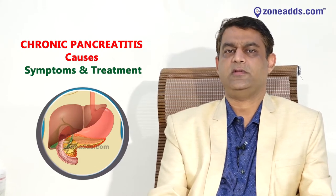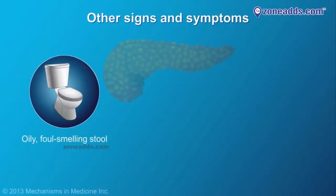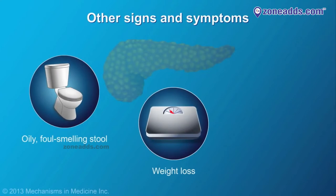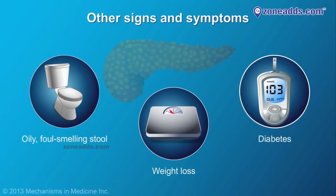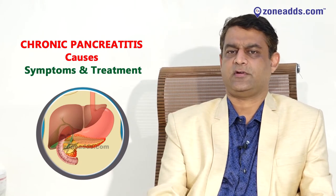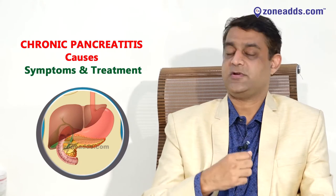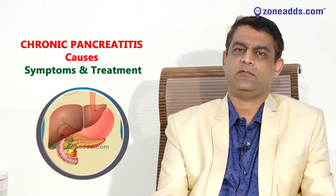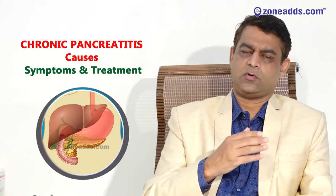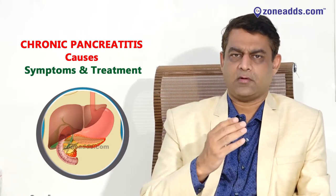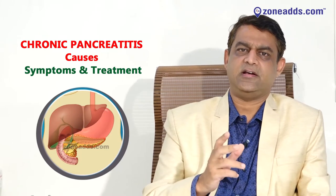The third important symptom relates to the stools. A lot of people will say they have sticky stools, and if they are careful they will tell you that whenever they pass motion, it usually keeps floating on the surface of the water. So basically we are looking at a patient who has pain and exocrine deficiency — malabsorption, especially of fats. A lot of patients of chronic pancreatitis will also present with diabetes, which depicts both exocrine and endocrine deficiency of the pancreas.